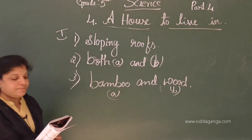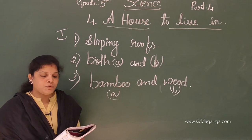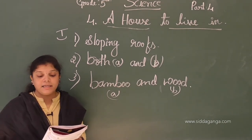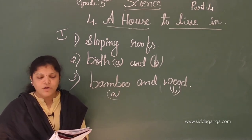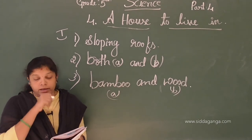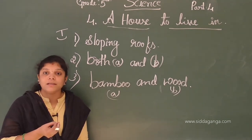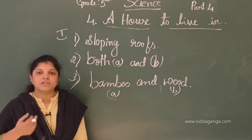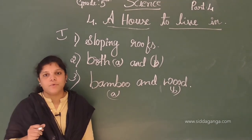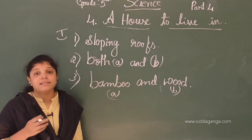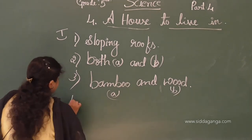Fourth question: which factor determines the size and design of a house — money, building materials, or place and climate? Money mainly determines the size and design of a house. With less money we can build smaller houses, and we need a lot of money to build big houses. So the correct answer is money.